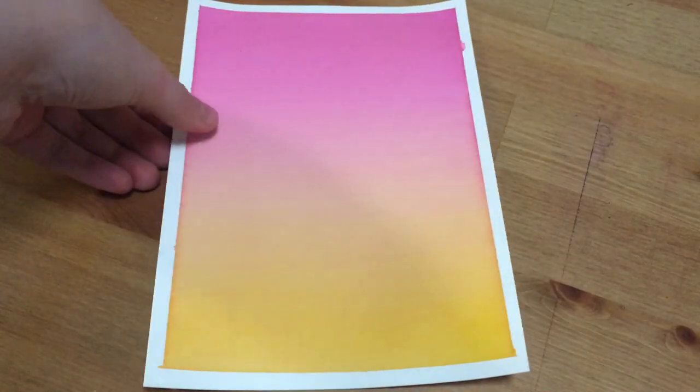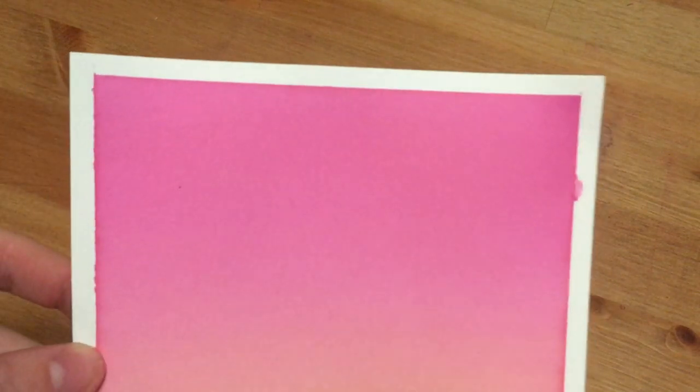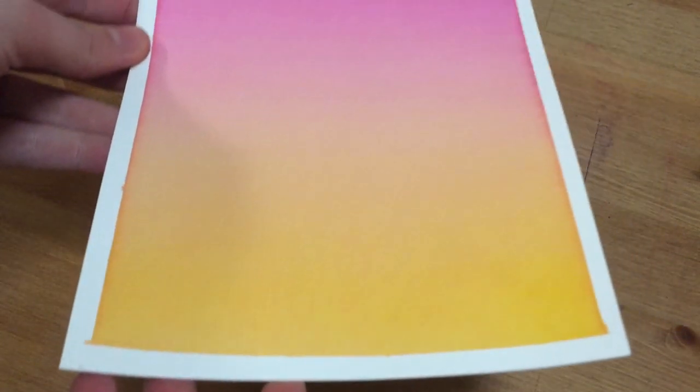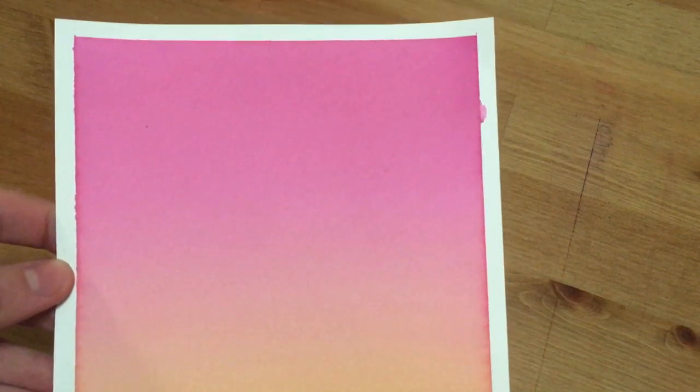And there you have it. After two layers of paint and allowing it to completely dry, this is what it looks like after I've taken the tape off. You can see that the edges where the tape has been are a bit darker, and I'm pretty sure that's because the paper does bow just a little bit and where the water pools, some of the pigment gathers and it does darken the edges a little bit.